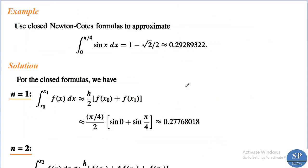Now we can discuss an example. Use closed Newton-Cotes formulas to approximate the integral from 0 to π/4 of sin(x) dx = 1 − √2/2 ≈ 0.29289. This is the exact value obtained by direct integration of sin(x) from 0 to π/4. We will use the closed Newton-Cotes formulas for n = 1, 2, 3, and 4.